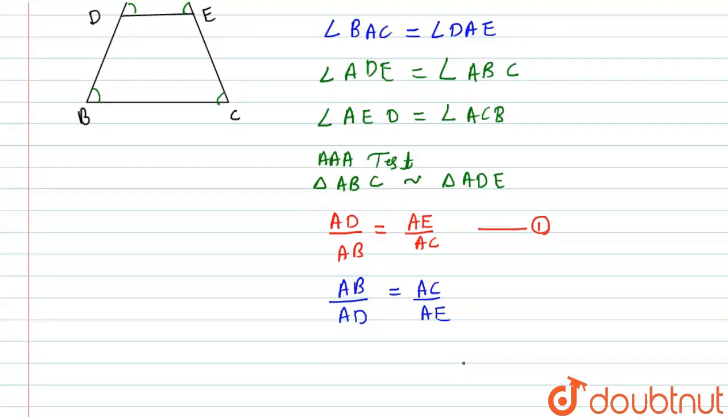I will subtract 1 from both of them. So here I will get AB divided by AD minus 1 equals AC divided by AE minus 1.